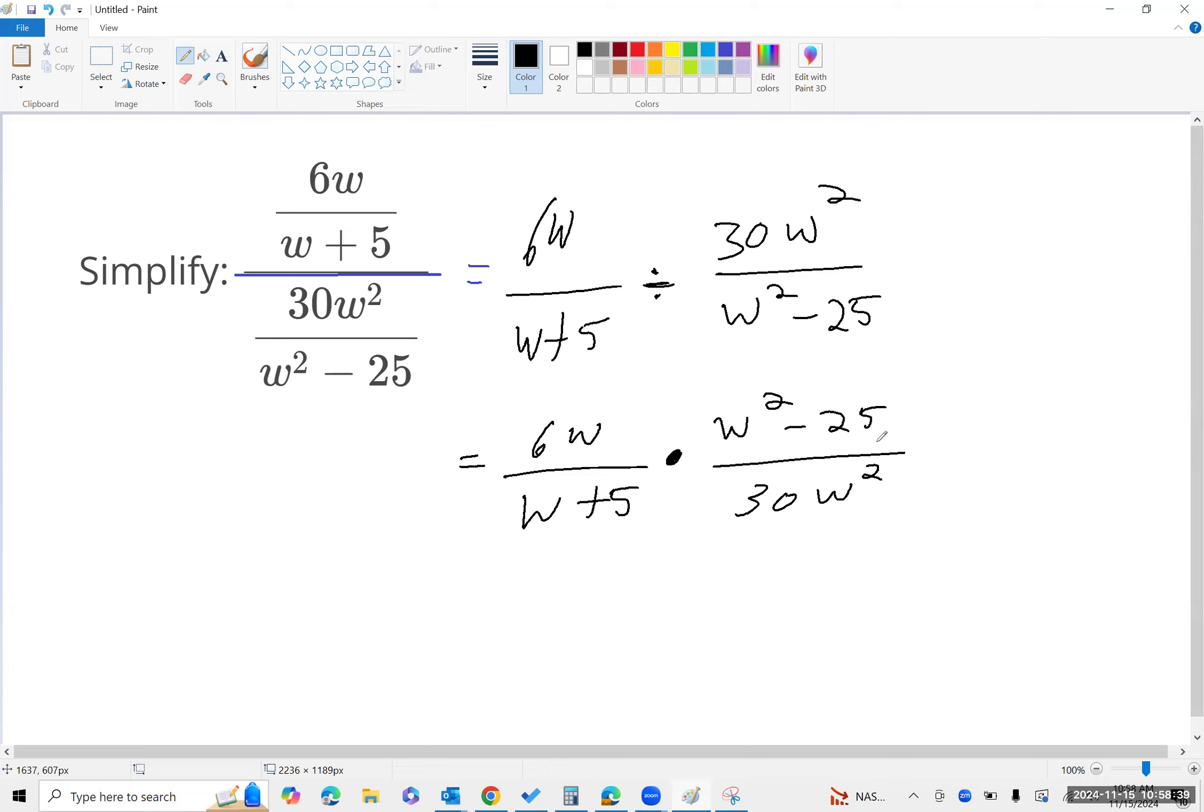So with two moves we've come up with something that's much more easy to work with. And then aside from that, you may notice this difference of squares, which is pretty easy to factor. So I'm going to move it over this way. I'm going to keep the 6w from here, the w plus 5, and then this is a difference of squares, so it's w minus 5 and w plus 5.